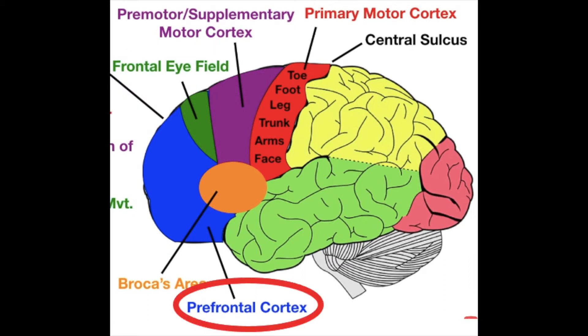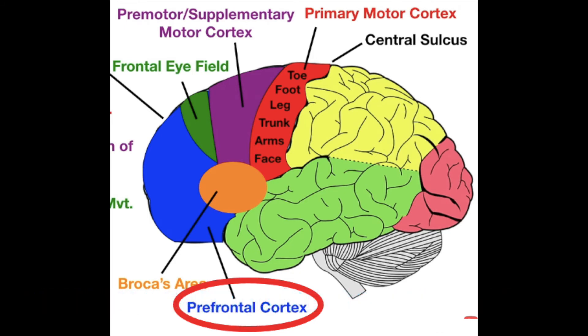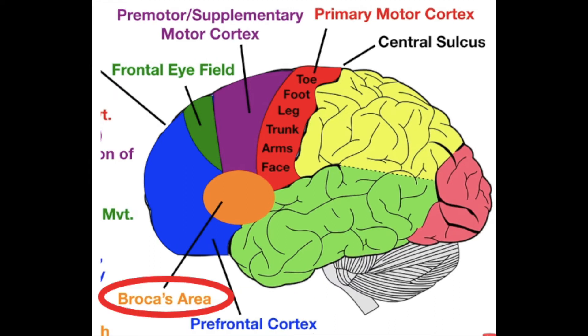The pre-frontal cortex makes up the majority of the frontal lobe and is responsible for memory, learning, personality, behavior, decision-making, judgment, motor planning, attention, and so many others. This is the place where those functions originate.